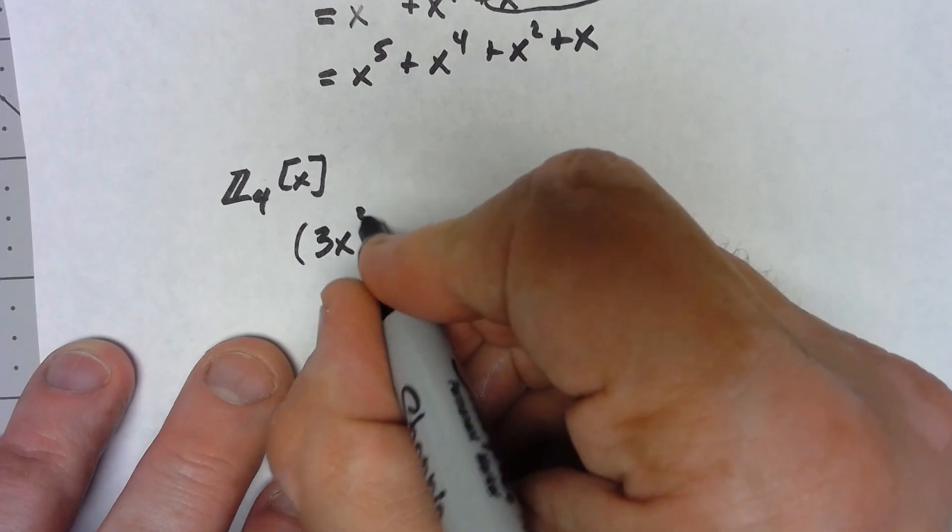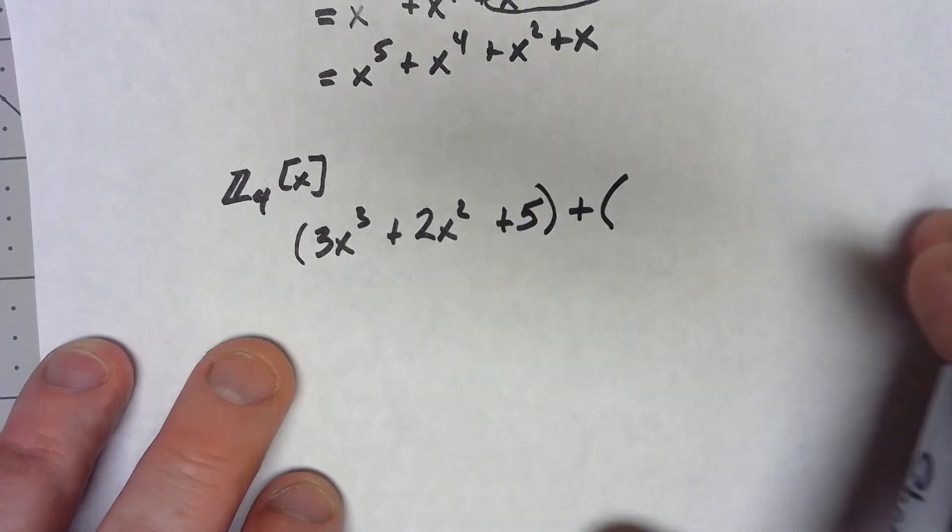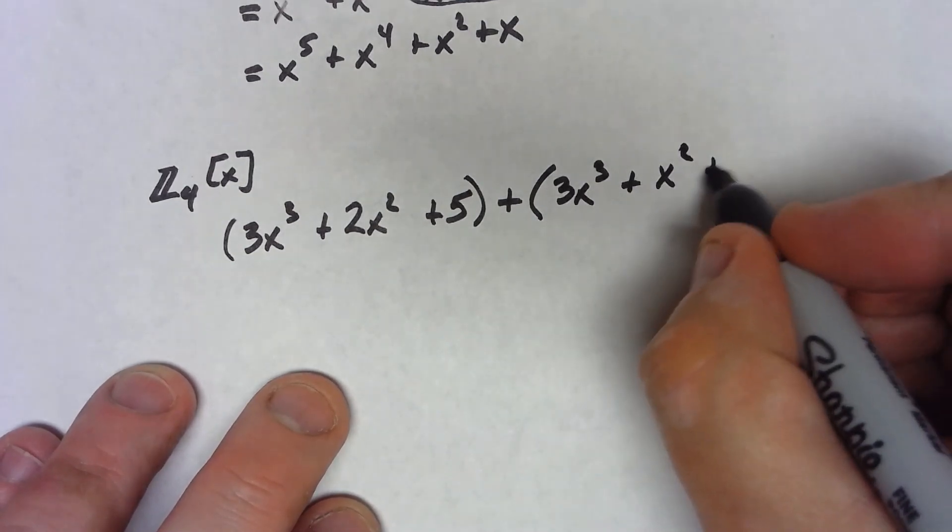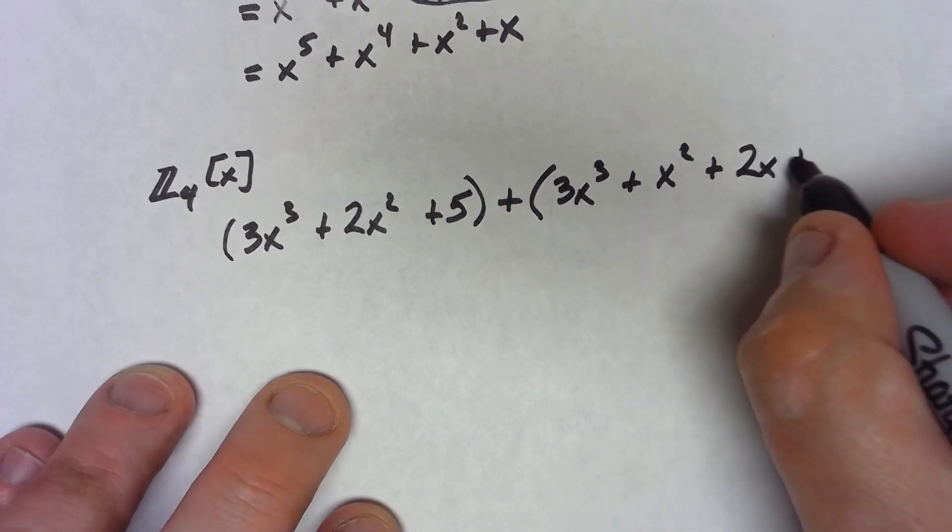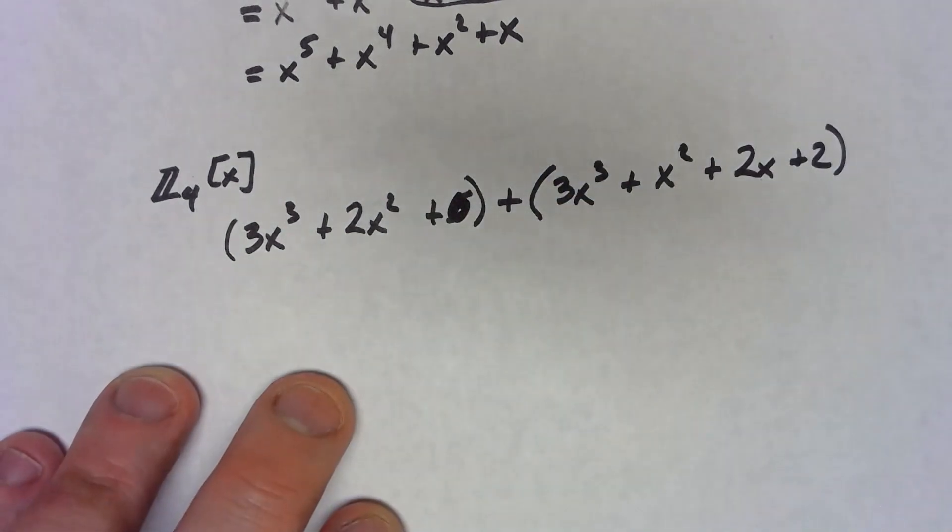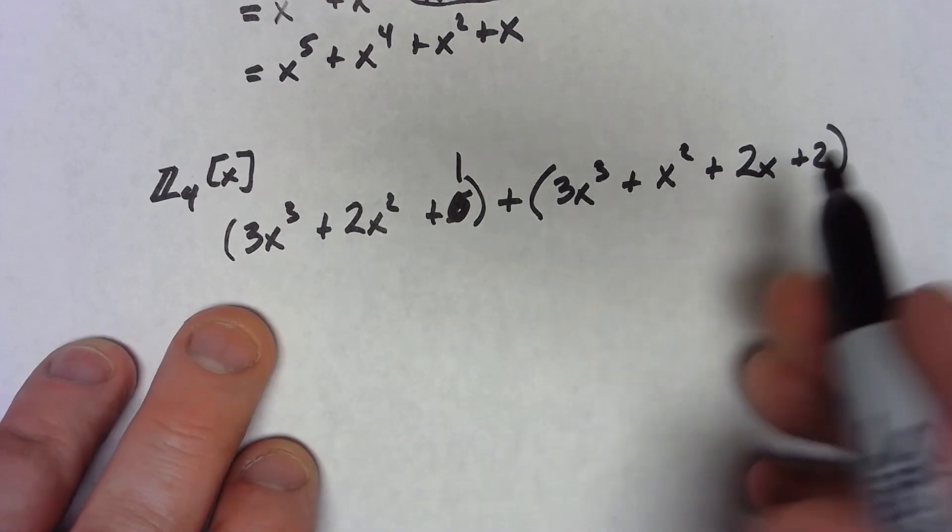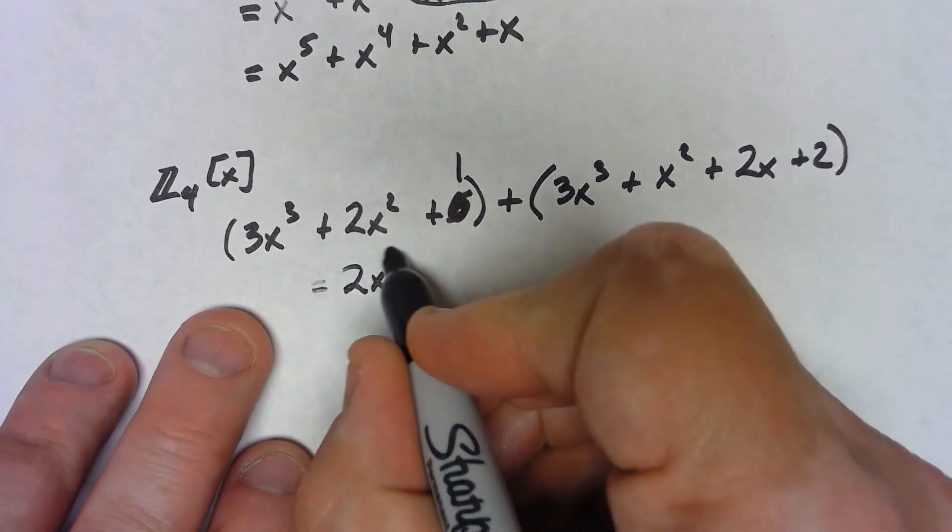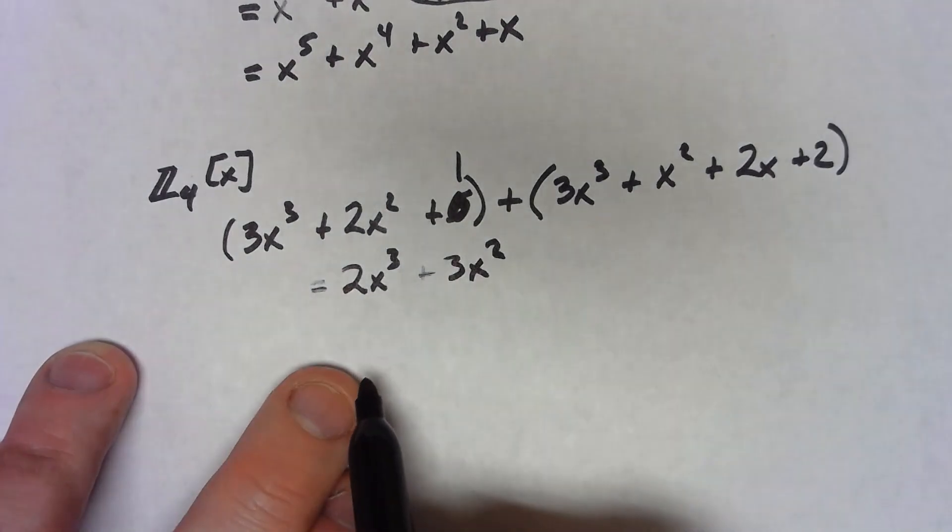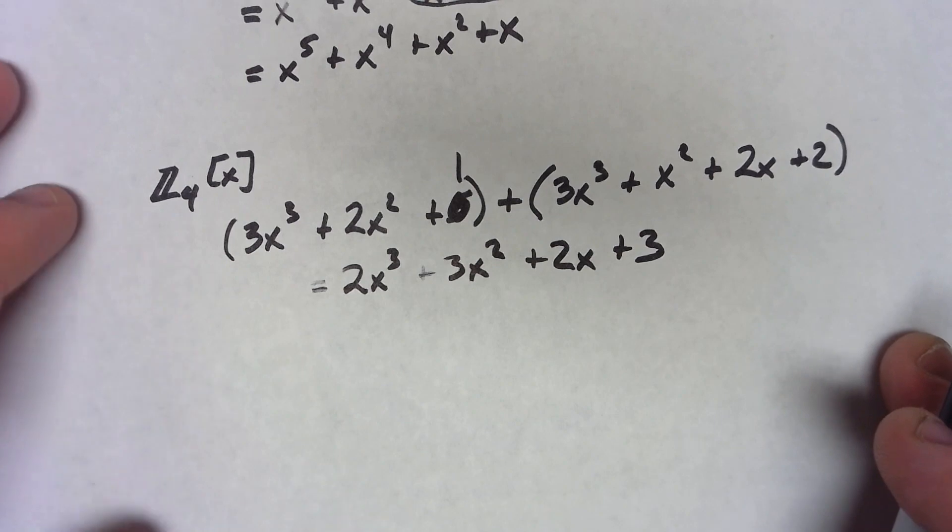So let's say I have something like 3x cubed plus 2x squared plus 5. And if I add 3x cubed plus x squared plus 2x plus 2... actually hold on, I said plus 5. That doesn't exist in Z4x. I can do plus 1 and that'll work. 3x cubed plus 3x cubed normally would be 6x cubed, but we've got to do things mod 4, so it's 2x cubed. 2x squared plus x squared, 3x squared, that's perfectly fine. There's only a single x, and 1 plus 2 gives me 3. All that thing is fine mod 4.